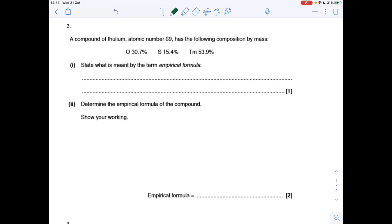Question two, what's meant by the term empirical formula? We must give the definition to the letter. So we need to say the simplest whole number ratio of atoms in a compound. Next part of the question, we've got to calculate the empirical formula of the compound and we must show how we're working.